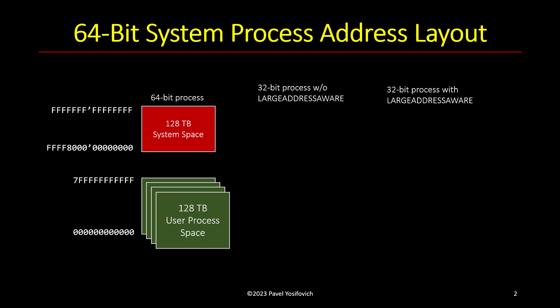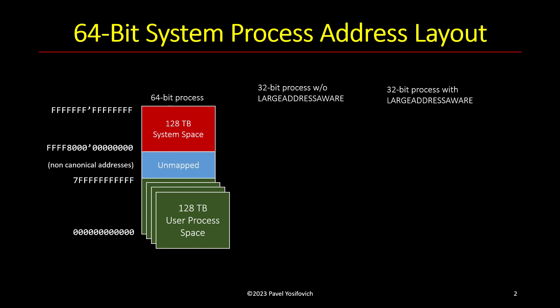The user-mode address space is on a per-process basis — every process thinks it has 128 terabytes to work with. System space, on the other hand, is a singleton because there's just a single kernel. If you sum these up, 128 plus 128 gives 256 terabytes. However, the theoretical 64-bit address space is 2 to the 64th power, which is 16 exabytes — a humongous number. Current hardware doesn't support that, so there is a large unmapped chunk that cannot be used, and it is much bigger than the usable address space.